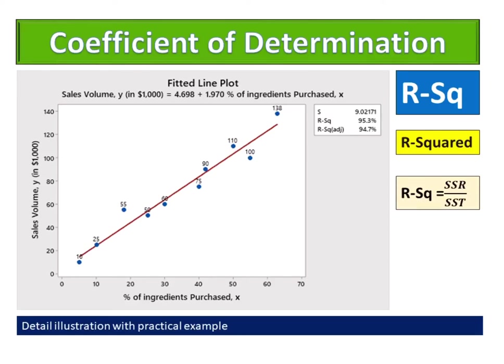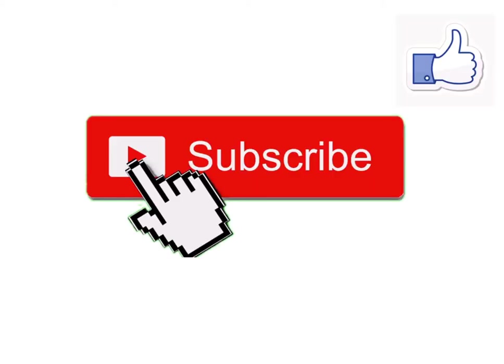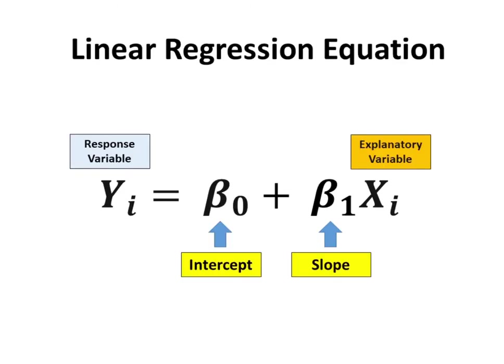Hi everyone, welcome to my channel again. Today I am going to share my fifth video of regression analysis, which is the coefficient of determination or R-squared. Before watching, please like, comment and subscribe to my channel. Your support will encourage me to produce more videos related to Statistics, Lean Six Sigma and Operation Management. We developed the estimated regression equation to approximate the linear relationship between x and y.